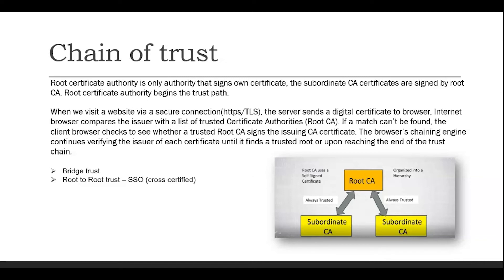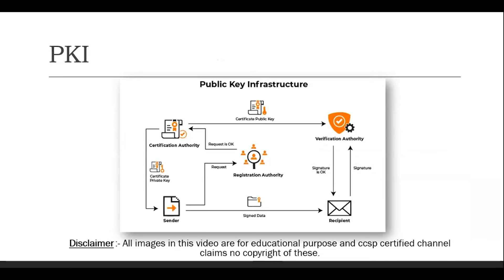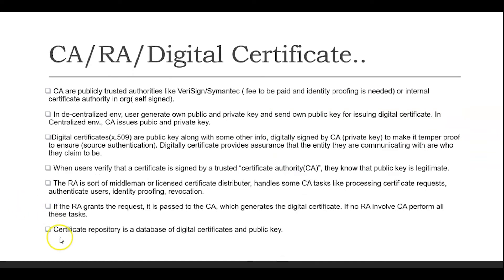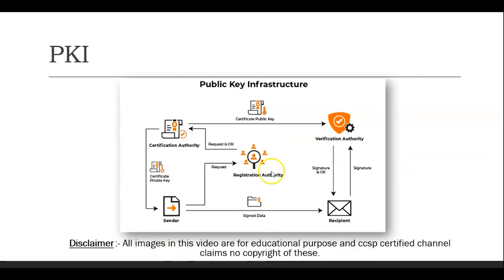The PKI verifies that root CA-signed certificates are validated at the browser level. I will cover TLS in the next video lecture in detail. The certificate repository is a database that contains all digital certificates and public keys — that is where you get the public key of Bob or Alice. In the PKI flow: the sender requests a certificate through the RA, the RA verifies the request, asks the CA to issue a certificate, the public key is stored in the repository, and the signed data is sent to the recipient.